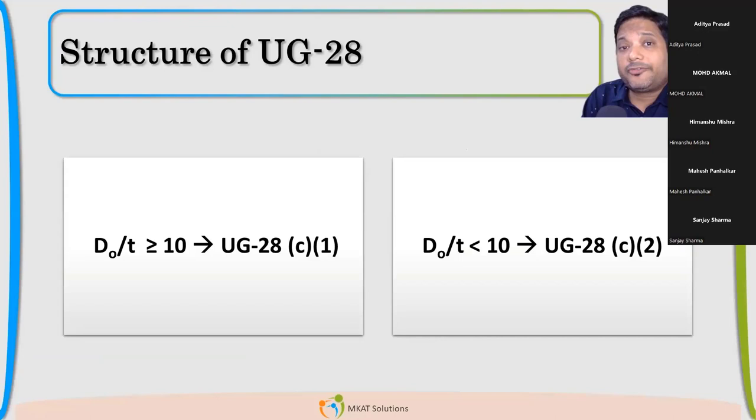The structure of UG 28, if you see, there are two different criteria which are given for design of external pressure. First one is whether my D0 by T ratio is less than 10 or it is greater or equal to 10. These are the two requirements which we need to take care.